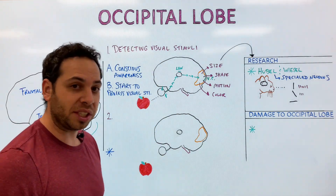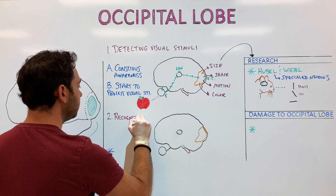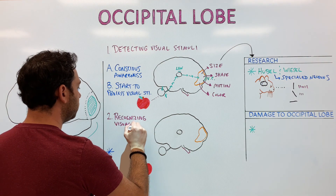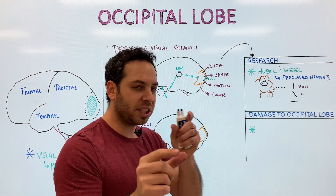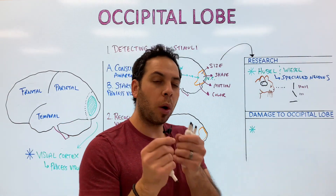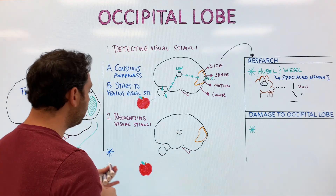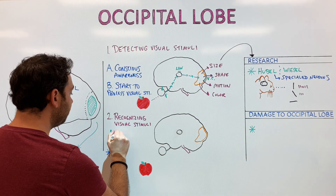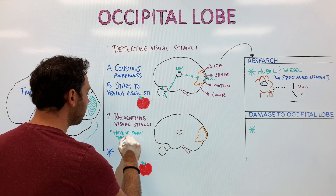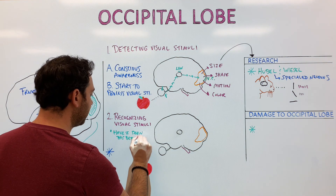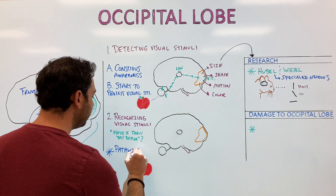So after we detect the visual stimuli, what's next? We have to recognize the object — recognizing the visual stimuli. We know it's there, we've started to process the form and size and shape, now we can identify what it actually is. What we're doing is matching that visual stimuli to something already in our mind. Even though you're not saying this out loud, your brain is essentially asking: have I seen this before? And it does this through pathways in the brain that lead to other regions.